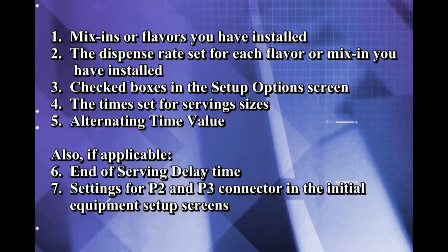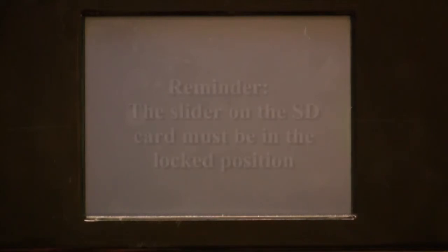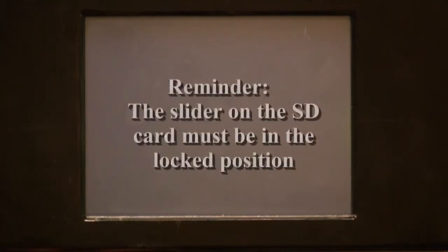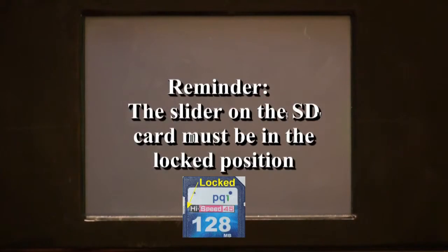After recording these settings, you can now update the touchscreen. Start by making sure that the touchscreen is powered off, then insert the SD card in the slot under the lower left-hand corner of the screen. You will need to insert this with the label facing away from you.